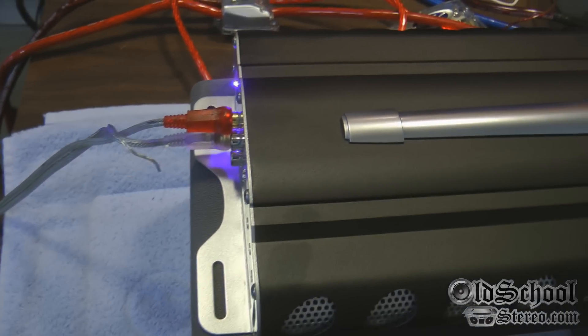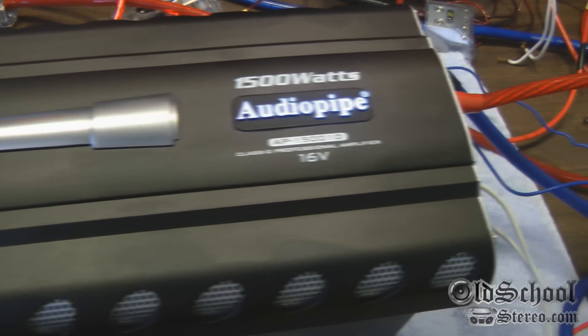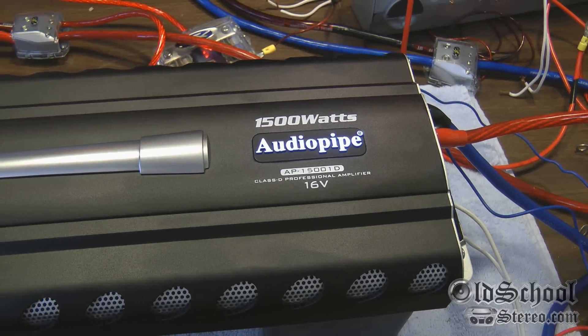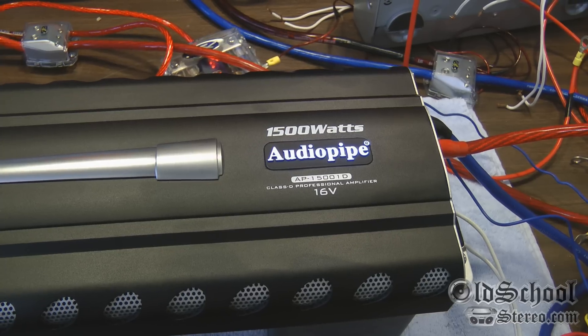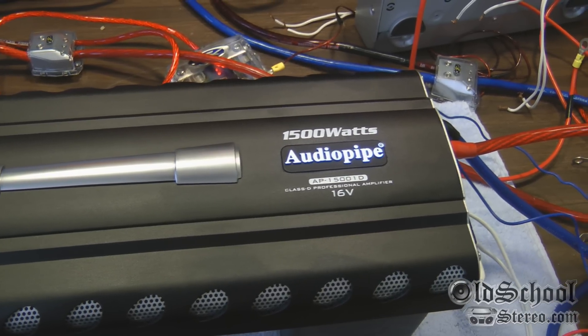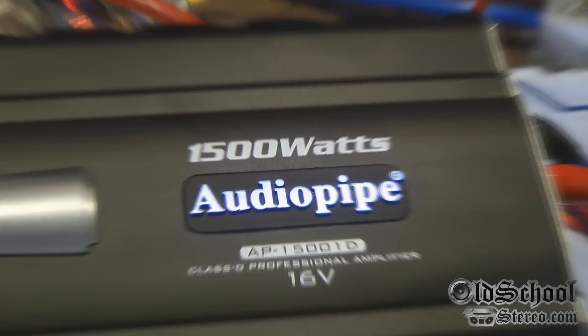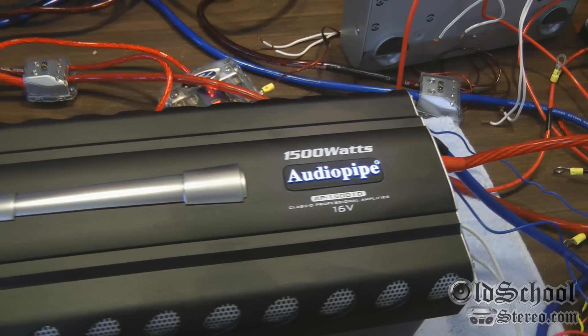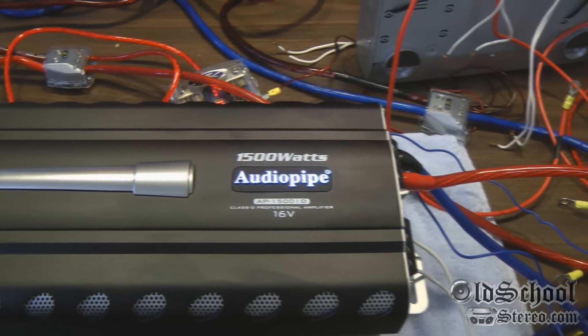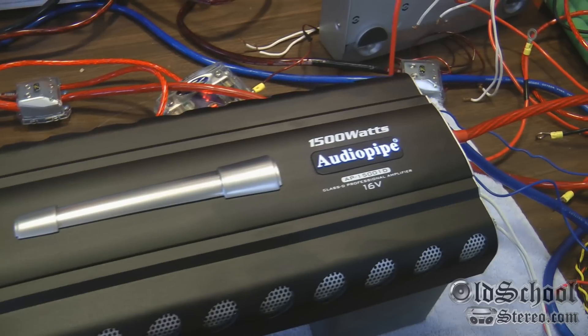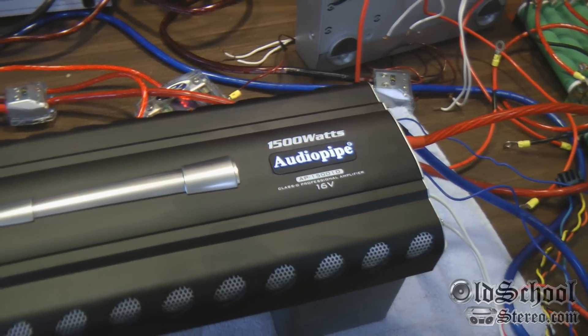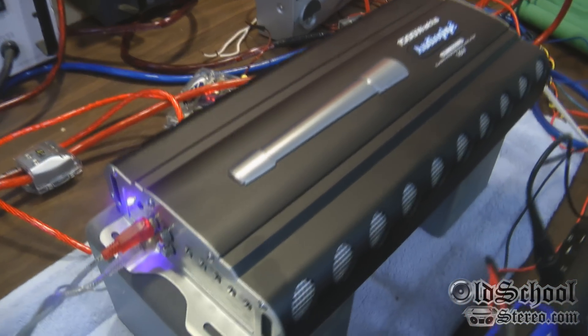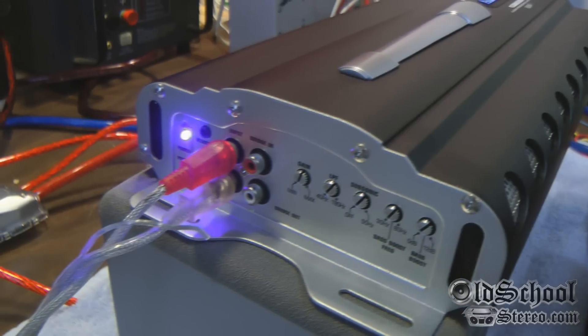Alright guys, so the reason I have this Audiopipe AP 15001D on my bench is really just curiosity. This amplifier is under $150 and promises 1500 watts. Now I'm a lot older than 16, but I can imagine when I was 16 years old, if I could get a 1500 watt amplifier for $150 I would have gone crazy because we were paying many dollars per watt back then.